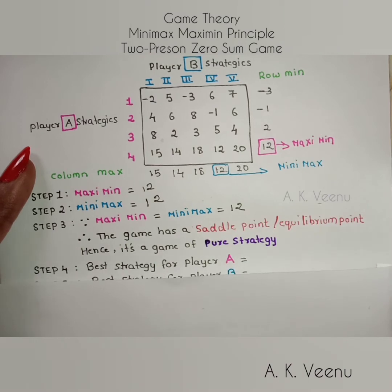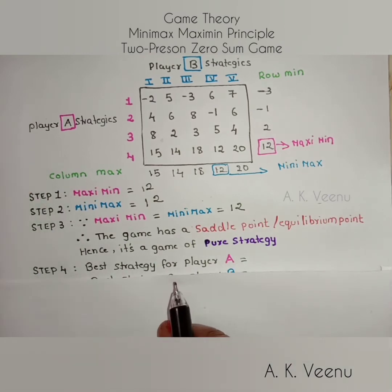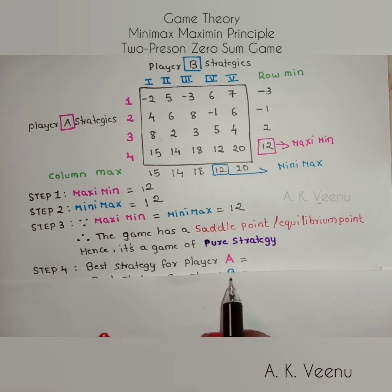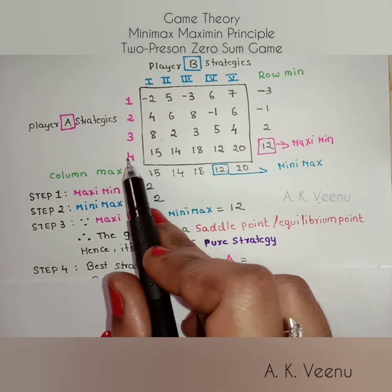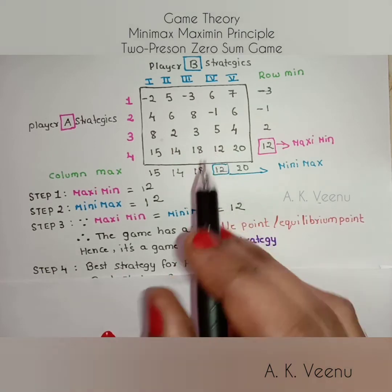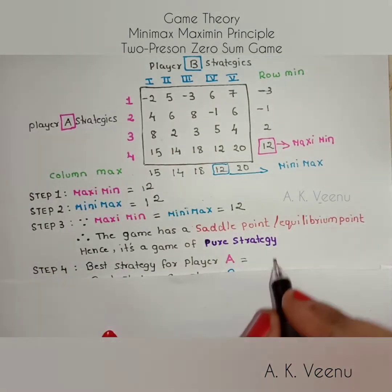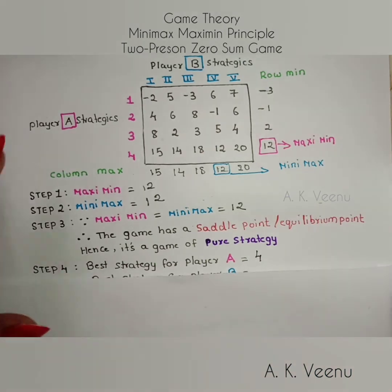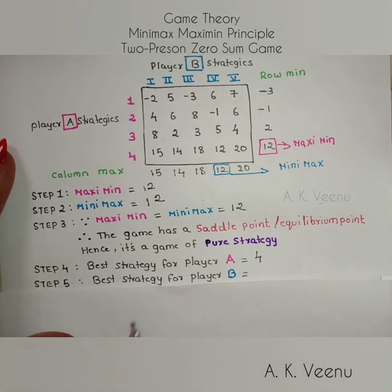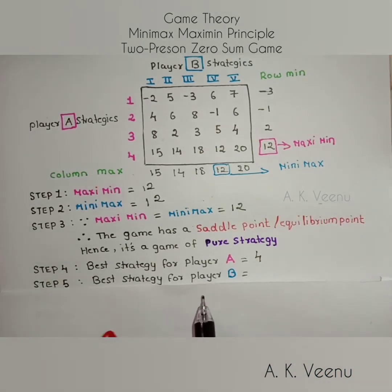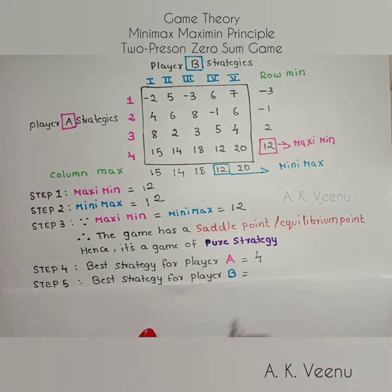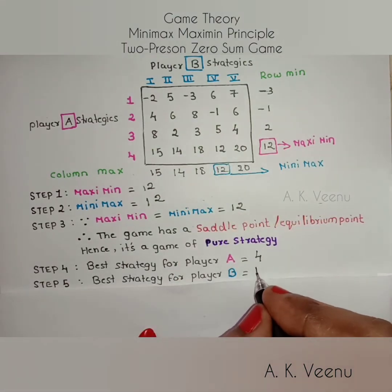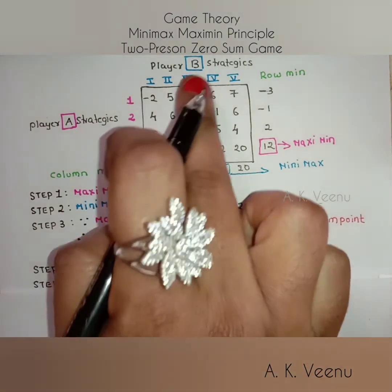The next step is to determine the best strategy for player A, which is the row corresponding to the saddle point — that is row 4. The best strategy for player B is the column corresponding to the saddle point, which is column 4.